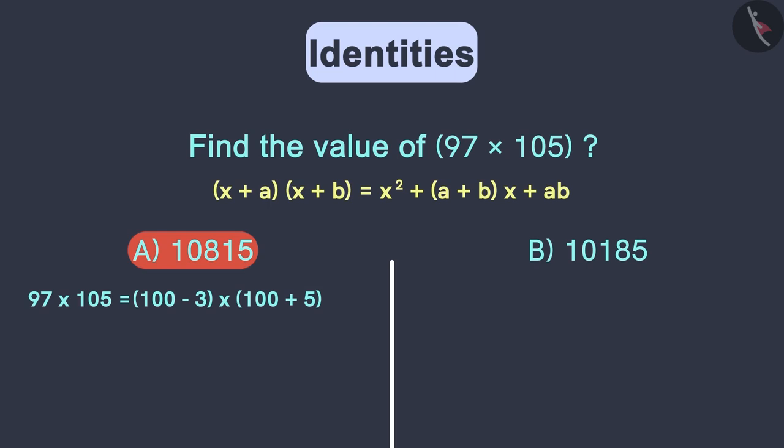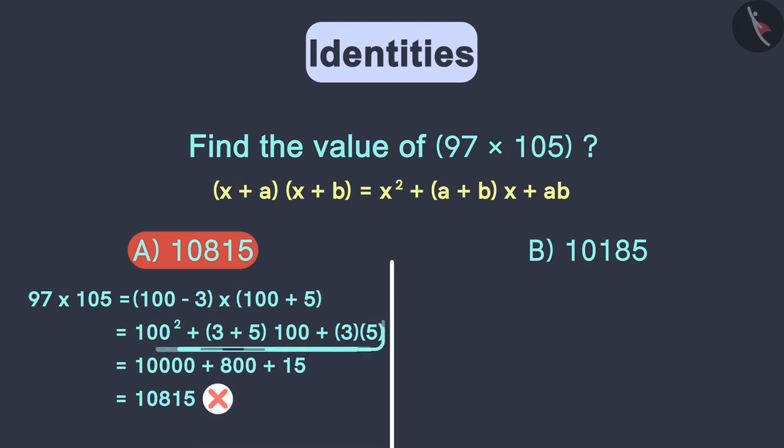Substituting the values in this identity, some of us get this. After further simplification, we end up getting this as the answer, but this is not correct. Look at this step. According to the identity, at both these places we have substituted the value of a as three. But if we carefully observe this, we could see that the value of a is not three but it is minus three.